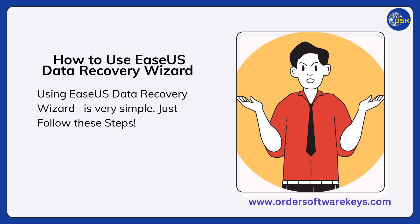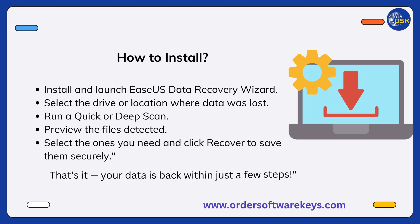Now, how to use Easeus Data Recovery Wizard? Using it is very simple — just follow these steps: install and launch Easeus Data Recovery Wizard, select the drive or location where data was lost, run a quick or deep scan, preview the files detected, select the ones you need, and click Recover to save them securely.